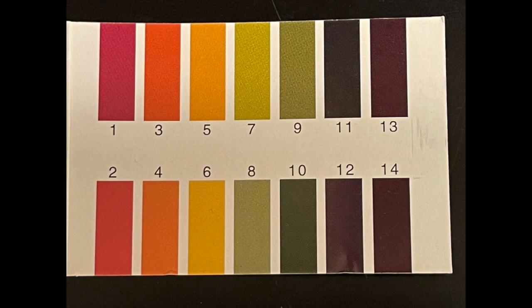If you're looking at this chart, anything under 7 will be an acid, 7 is neutral, and anything above 7 is the base.